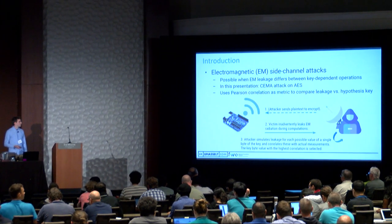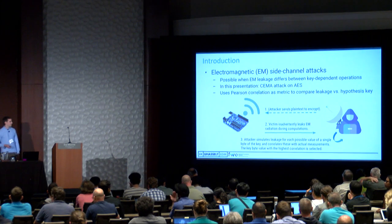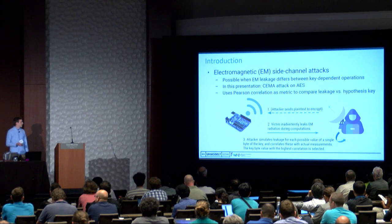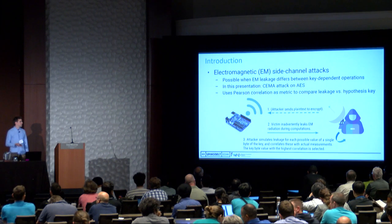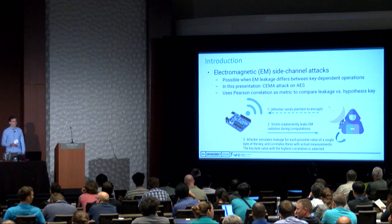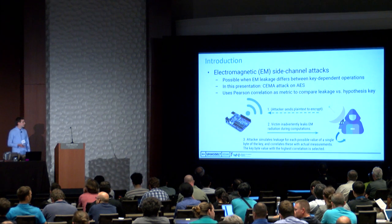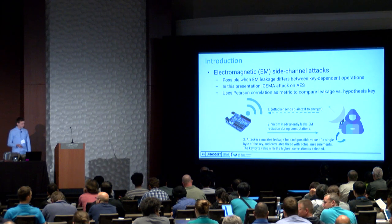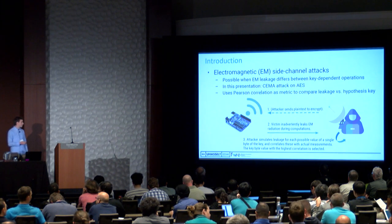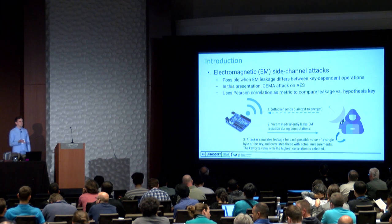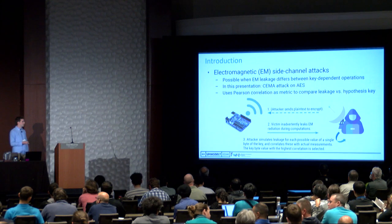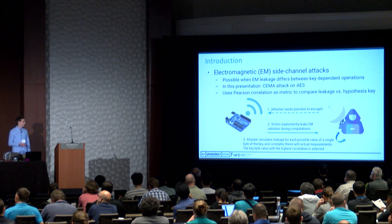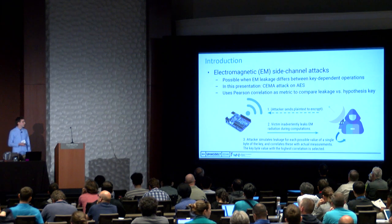First, I wanted to start with an introduction about what electromagnetic side channel attacks are. EM side channel attacks are possible when you have certain leakage from a device that differs between key-dependent operations. This presentation will talk about CMA attacks on AES in particular. In the CMA attack, you have a Pearson correlation which we use as a metric to compare the leakage versus a certain hypothesis key that the attacker composes. The attacker sends the plaintext to encrypt to the device, the device performs the encryption and inadvertently leaks electromagnetic radiation during computations. The attacker simulates the leakage for each possible value of a section of the key—for example, a single byte—and correlates these with actual measurements. The key byte with the highest correlation is the best guess.